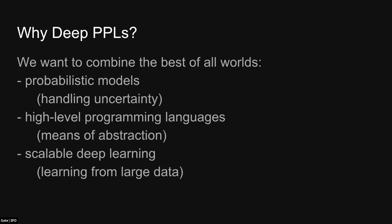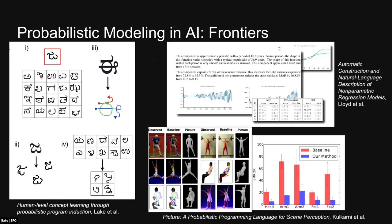In Pyro and in probabilistic programming languages in general, the goal is to build a very general modeling language and then have somewhat automated inference, so that we don't have to spend months every time we change the model to build new inference algorithms. We want to leverage high-level programming languages to describe very complex probabilistic models and have somewhat automated inference. The deep part of deep probabilistic programming is also integrating neural networks into these models, which allows us to scale to larger data sets.